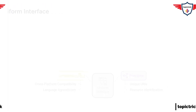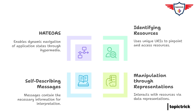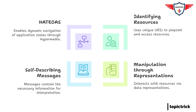In simple terms, a uniform interface means that a REST API should provide a consistent and predictable way for clients to interact with it. No matter what programming language the client is using or what platform they're on, they should be able to interact with the API in the same way. One of the key principles is using unique URIs to identify resources — those are like web addresses. Each resource in a REST API should have its own unique URI. So in a banking API, for example, there would be a separate URI for accessing customer information, account details, transaction history, and so on.